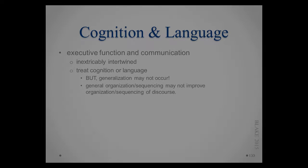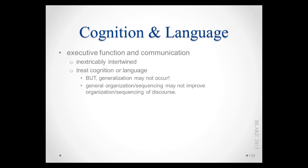Some people will suggest you can do cognitive treatment just working on organization and sequencing, and if you can remediate that problem then you should also see gains in discourse and language. The problem is that gains may not generalize as you hope, and using decontextualized, non-meaningful organization and sequencing tasks — organizing things by alphabet or sequencing by shape or size — are really kind of isolated abilities. Just because someone can alphabetize better or sequence things more rapidly doesn't mean those gains will generalize.